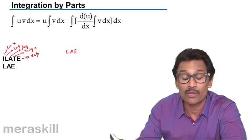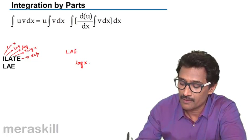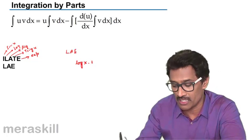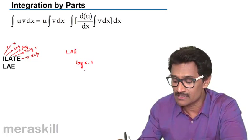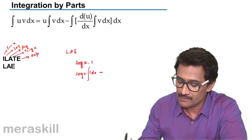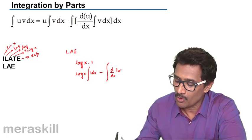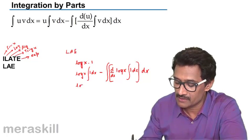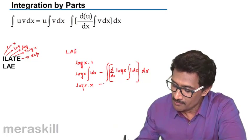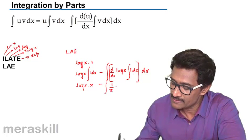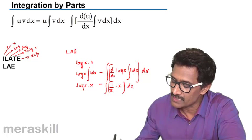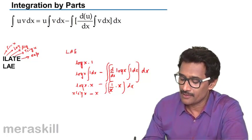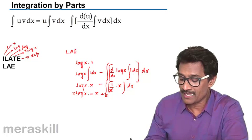For example, if you have ∫log(x)·1 dx, we have a logarithmic function and the other is algebraic (1 is x raised to 0). By ILATE, we take log(x) as u. So it becomes log(x)·x minus ∫(1/x)·x dx. The x's cancel, giving x·log(x) minus ∫1 dx, which is x·log(x) minus x plus the constant.